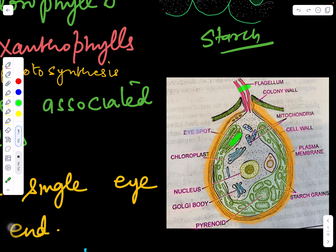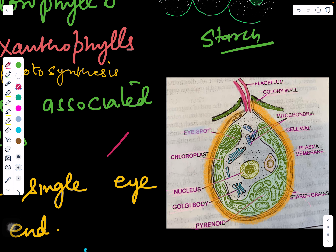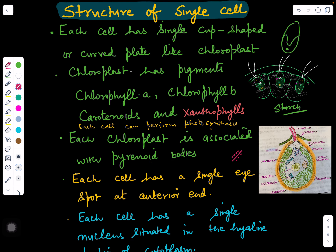We can see in the structure: there is one pair of flagella, a red eye spot or stigma, a cup-shaped chloroplast, the nucleus, cell organelles like Golgi bodies and mitochondria, and food stored in the form of starch grains. The pyrenoid body also helps in storage of starch. The red eye spot or stigma is present toward the anterior side and senses light.